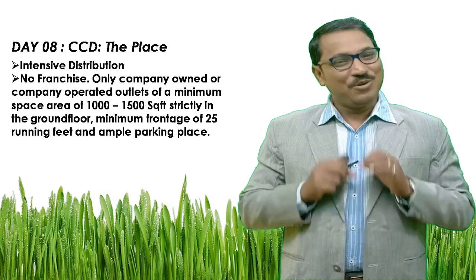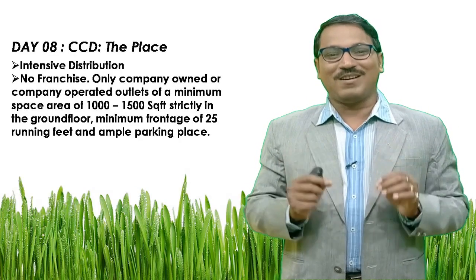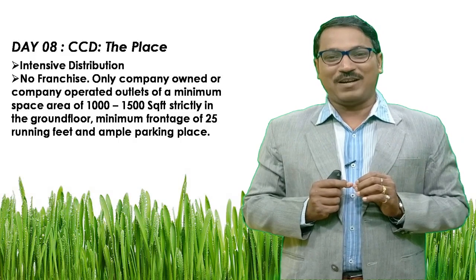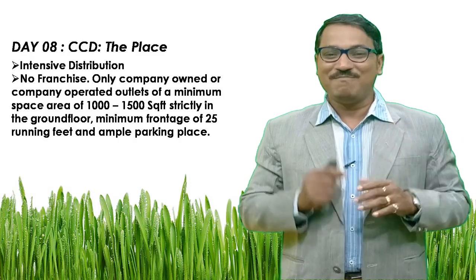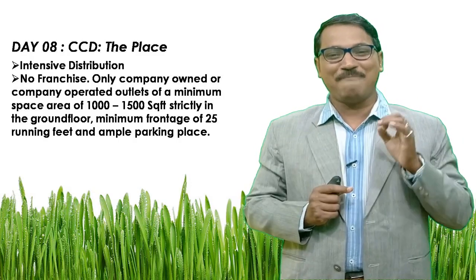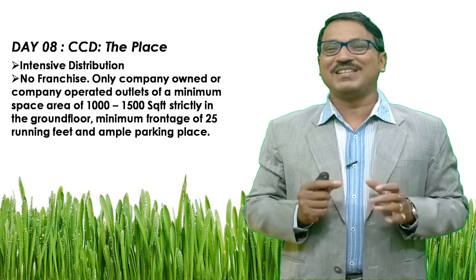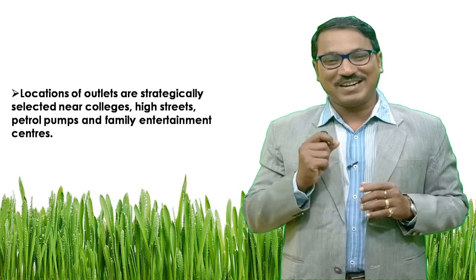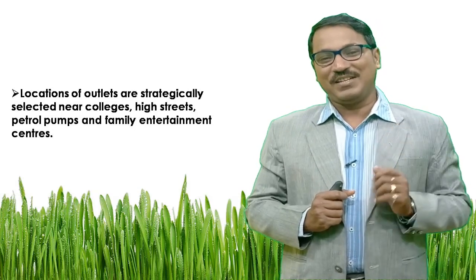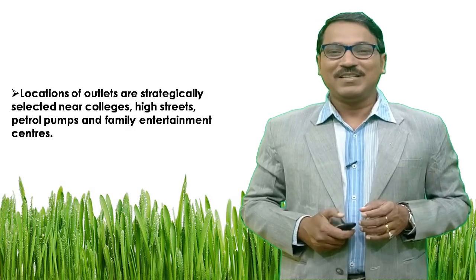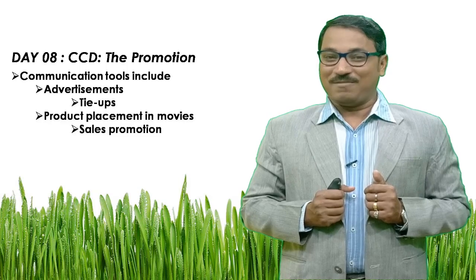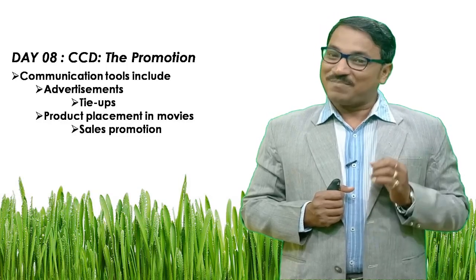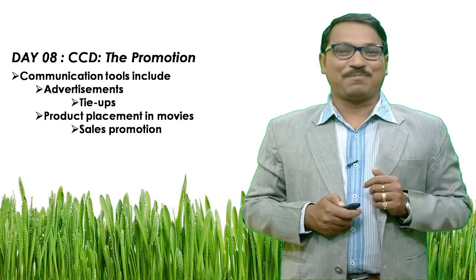The third P is place. It is intensive distribution with no franchisee — only company-owned or company-operated outlets of a minimum space of 1000 to 1500 square feet, strictly on the ground floor. A minimum frontage of 25 running feet and ample parking is required to open a CCD outlet. Locations are strategically selected near colleges, high streets, petrol pumps, and family entertainment centers. The fourth P is promotion. Communication tools include advertisements, tie-ups, product placement in movies, and sales promotion.